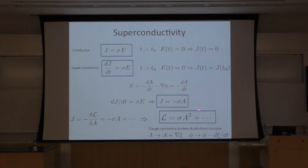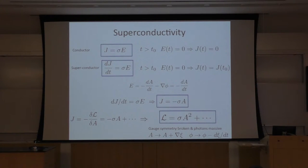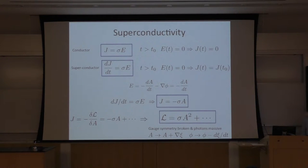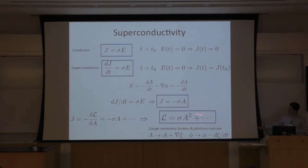In action formalism, the current is proportional to the variation of the Lagrangian with respect to the gauge field, and this must equal minus sigma·A to lowest order. So J proportional to A means the action must contain the term sigma·A². This term breaks gauge symmetry, because gauge symmetry is defined such that adding this term to the Lagrangian breaks it. And this term provides mass to photons — so photons become massive. Whenever we have this term in the Lagrangian, we obtain a superconductor.